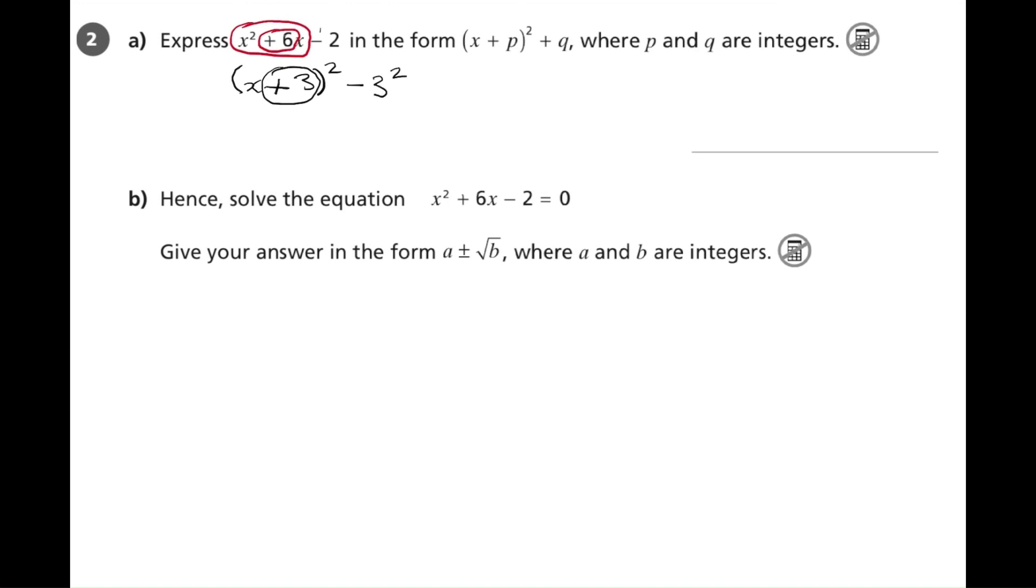We've also got minus 2 on the end. So this gives us x plus 3 all squared minus 9 minus 2, and minus 9 minus 2 is minus 11. So the answer is x plus 3 all squared minus 11, and that's in the format that was asked for.